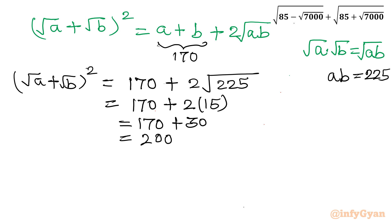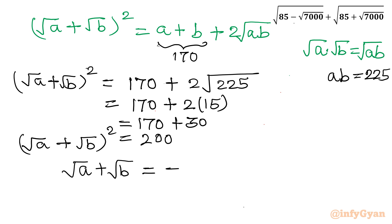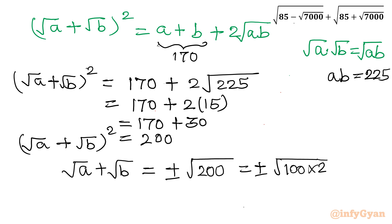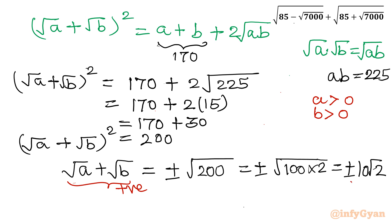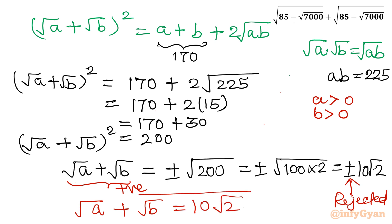Taking the square root of both sides: square root a plus square root b equals plus or minus square root 200. Square root 200 equals square root of 100 times 2, so it is plus or minus 10 root 2. We reject the minus sign since we have already proved a and b are positive, so square root a plus square root b is always positive. Our final answer is 10 root 2.